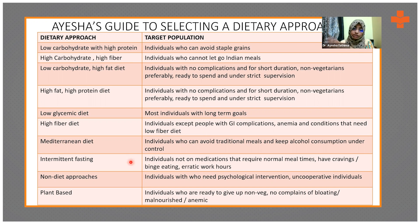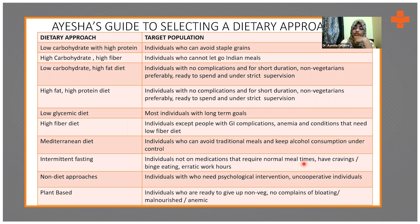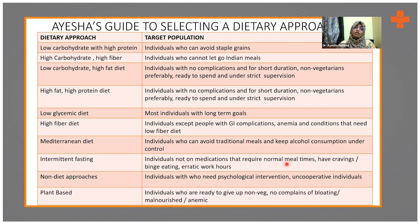Mediterranean diet is for individuals who have good self-control and can manage the amount of alcohol they consume. It is not really suitable for people who cannot avoid staple grains. Intermittent fasting is for people not on medications that require normal meal timings — it's not recommended for people with TB, malnourishment, high catabolic states, binge eating disorders, or erratic shift-based work schedules, as they may find intermittent fasting quite difficult to follow.